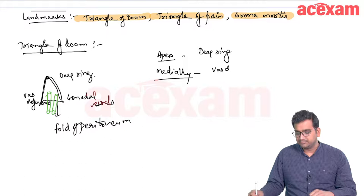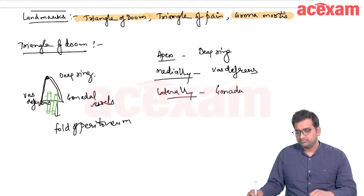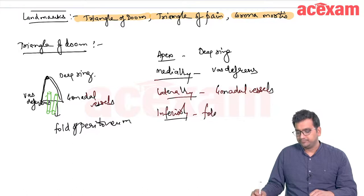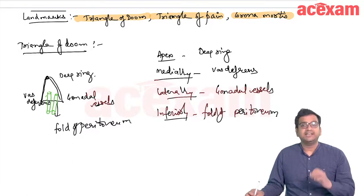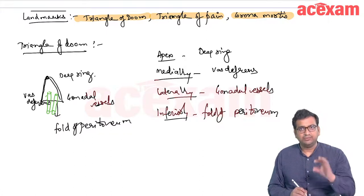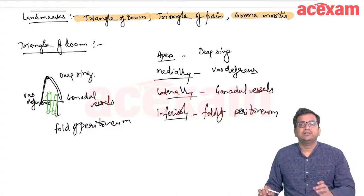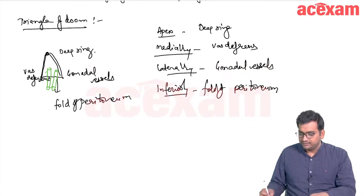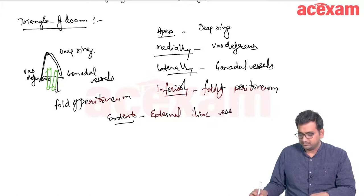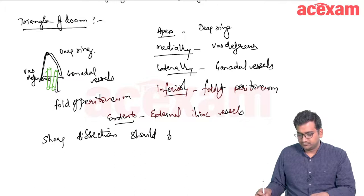The content of the triangle of doom is the external iliac vessels. Any sharp dissection injuring these vessels can lead to massive bleeding and death of the patient — hence the name 'triangle of doom.' Sharp dissection should be performed very carefully in this region.